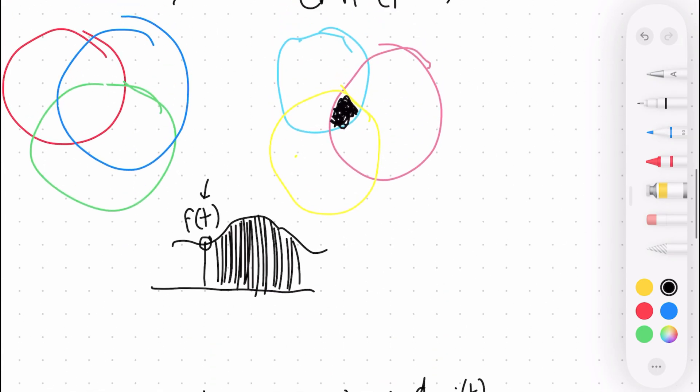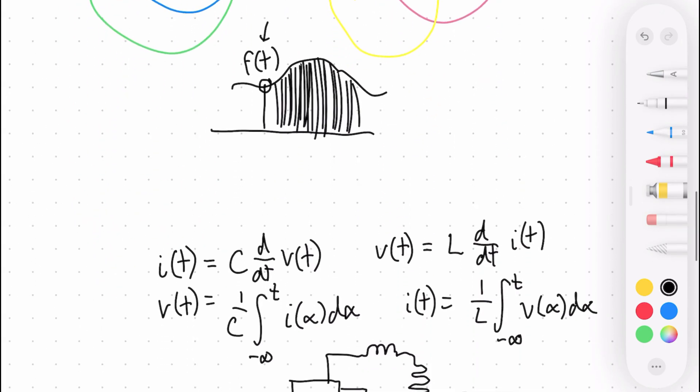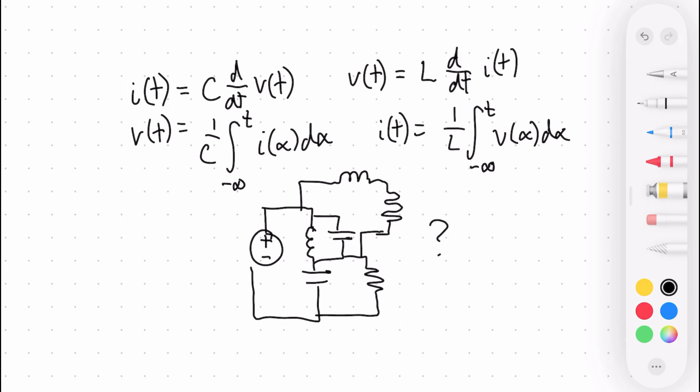So what if there's a way we can represent it similarly to how we did with RGB moving to CMY, where it's really easy to solve these differential equations? We can turn these differential equations into algebraic equations, and then solve our circuit really easily. And once we've done that, we can just turn it right back into the time domain once we have solved for what we want to have, whether it's voltage or current.